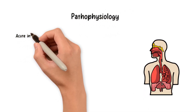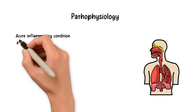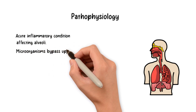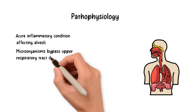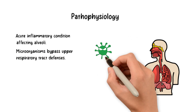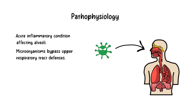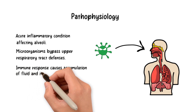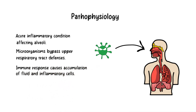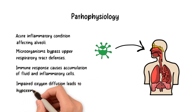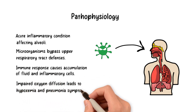Pneumonia is an acute inflammatory condition of the lungs primarily affecting the alveoli. When inhaled microorganisms, such as bacteria, viruses, or fungi, bypass the upper respiratory tract defenses, they enter the lower respiratory tract, reaching the alveoli. In response to the invading pathogens, the body activates an immune response, leading to the accumulation of inflammatory cells, fluid, and debris within the alveoli. This causes consolidation and impairs oxygen diffusion, resulting in hypoxemia and the hallmark symptoms of pneumonia.